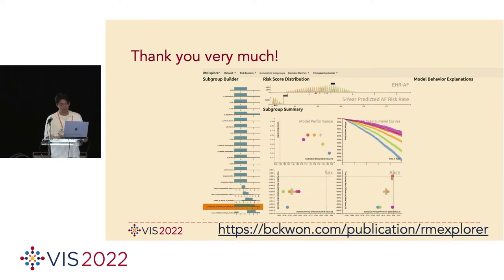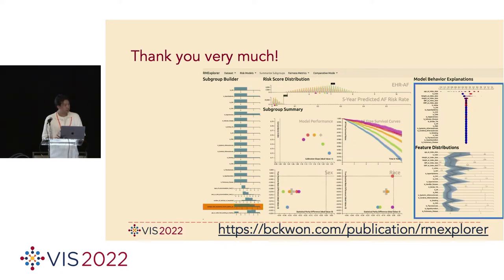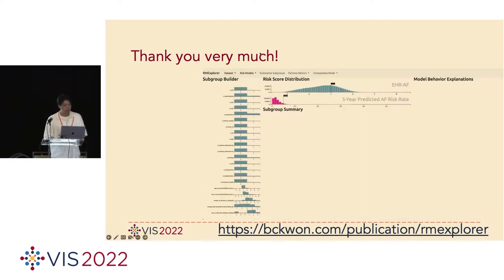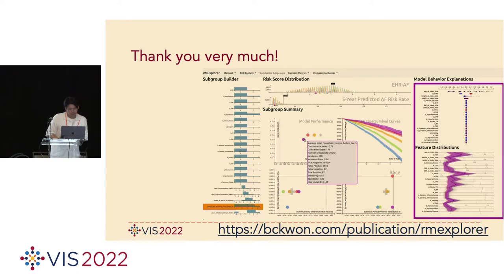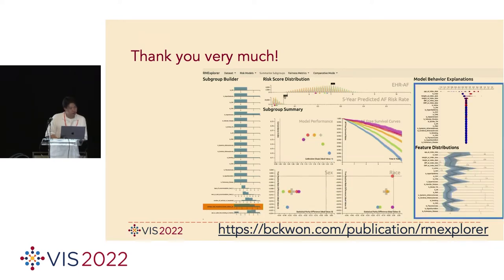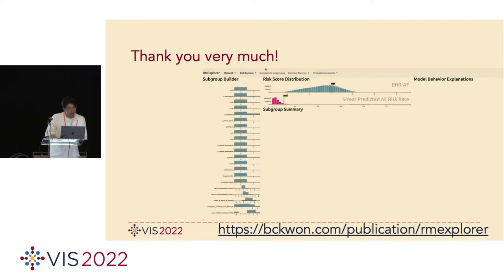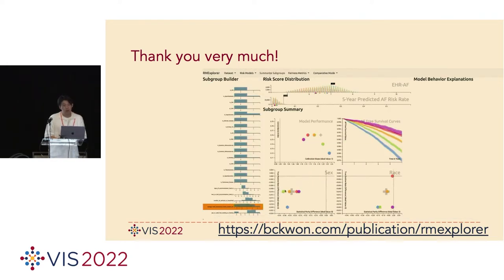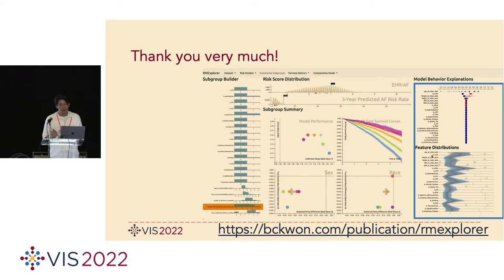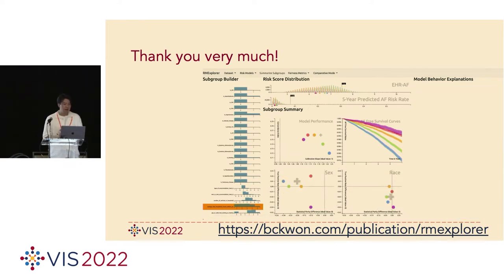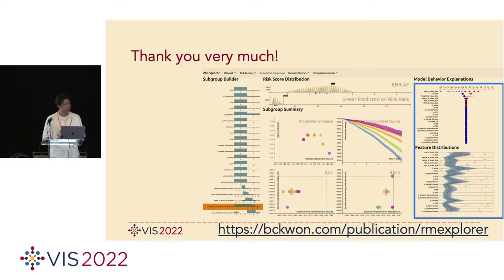Thank you for your talk. Daryl asked: SHAP values for binary features seem cluttered tightly. Is there a way to improve on that? Feature importance, especially SHAP visualization, binary features always cluster. That is a great direction for future work and there's definitely a way to improve it.